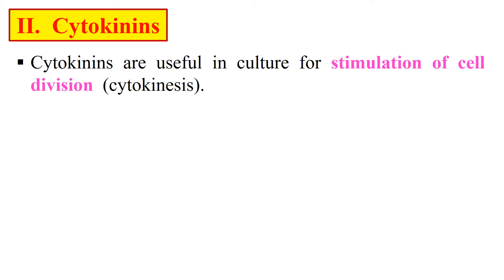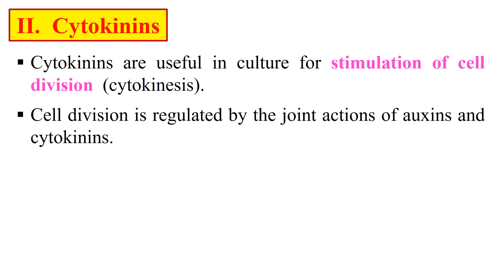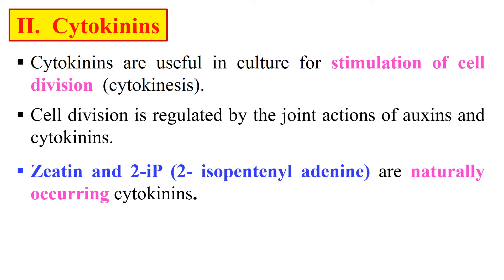Next are the cytokinins. They stimulate cell division. As the name indicates, 'cyto' means cell and 'kinesis' means division — they get their name because they induce or stimulate cell division. Cell division is generally regulated by the joint action of both auxins and cytokinins; they work together to regulate cell division.